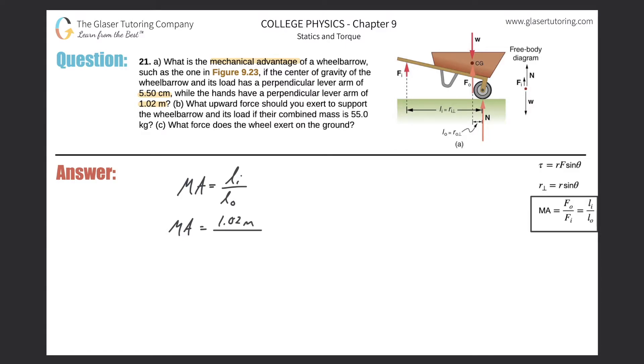So that lever arm here as they told us was 1.02 meters, and then the output lever arm is basically going to be the distance between the center of gravity line of action and the fulcrum right in here, and that's going to be as they told us 5.50 centimeters. Now we have a problem—these units are not consistent.